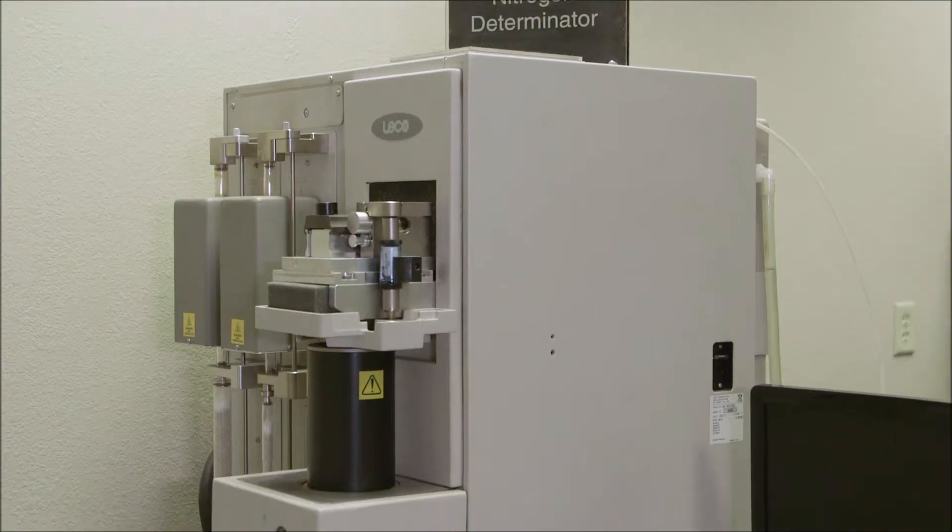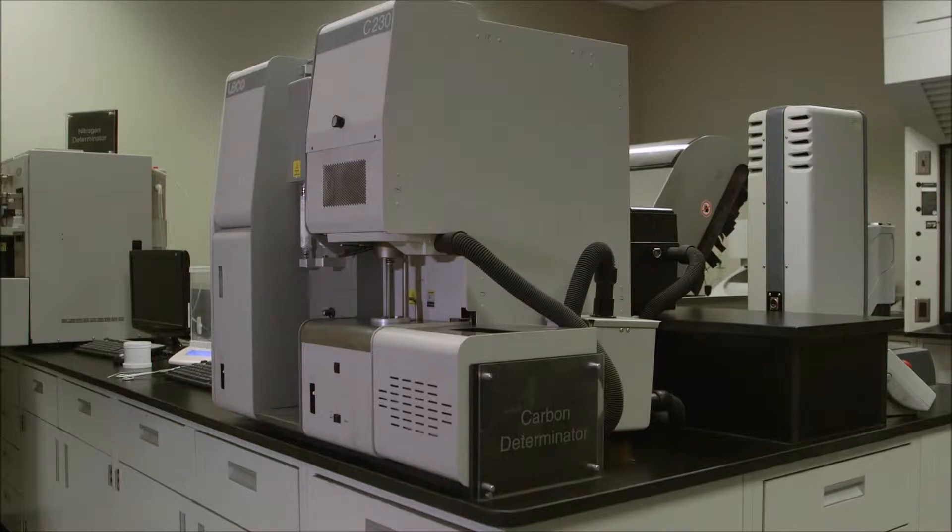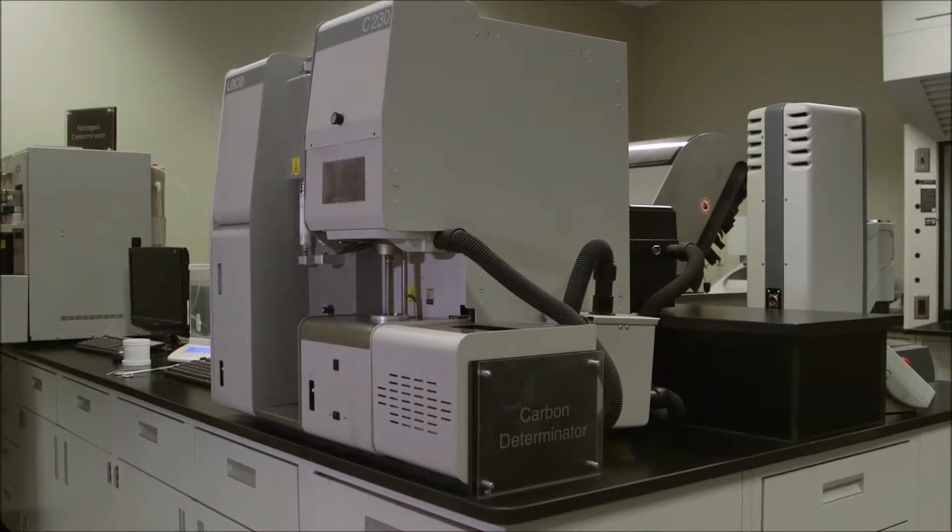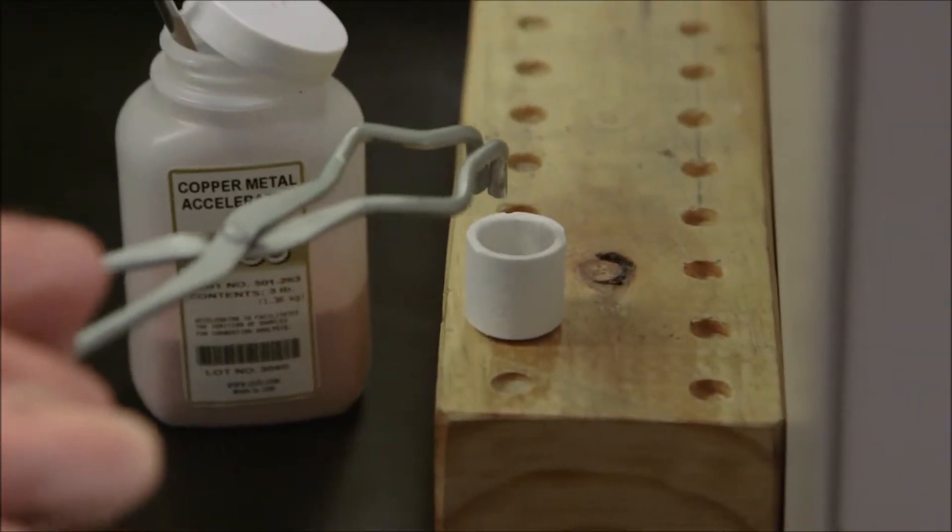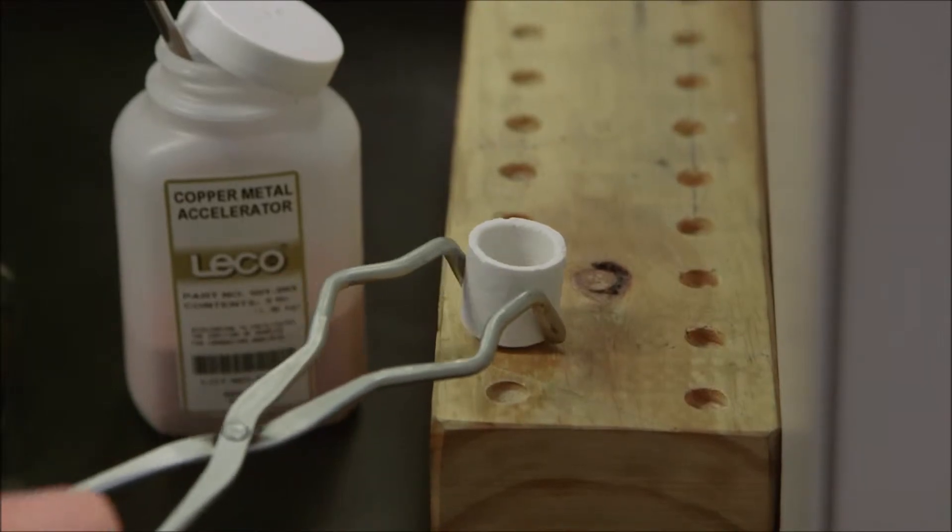While our spectrometer is a great method for identifying the chemical composition of different materials that we use, we also have a LICO nitrogen analyzer and a LICO carbon detector for analyzing these very important small elements that exist within our materials.